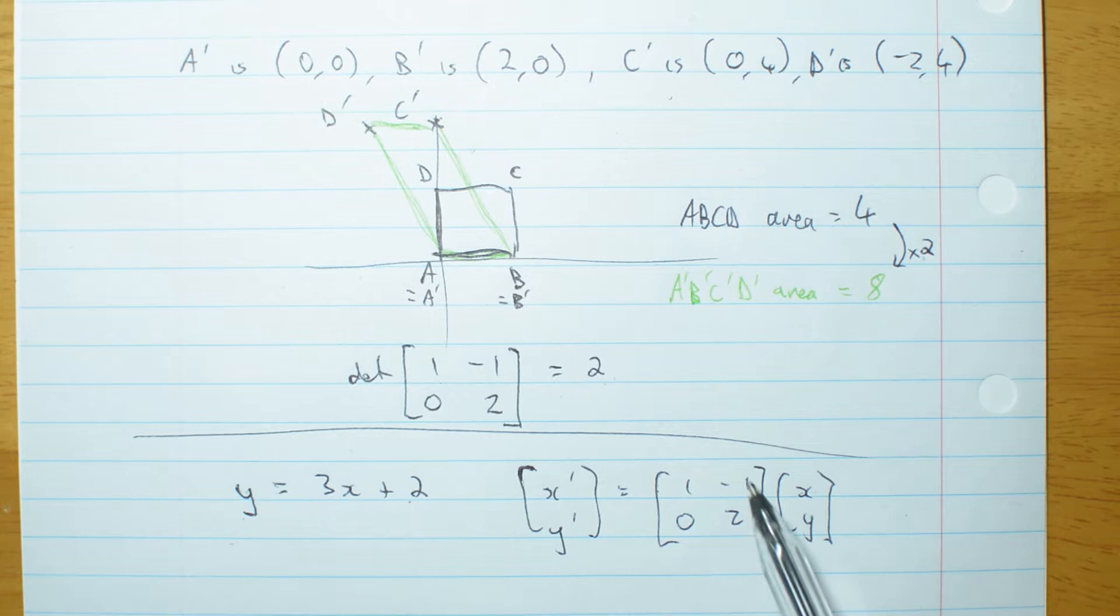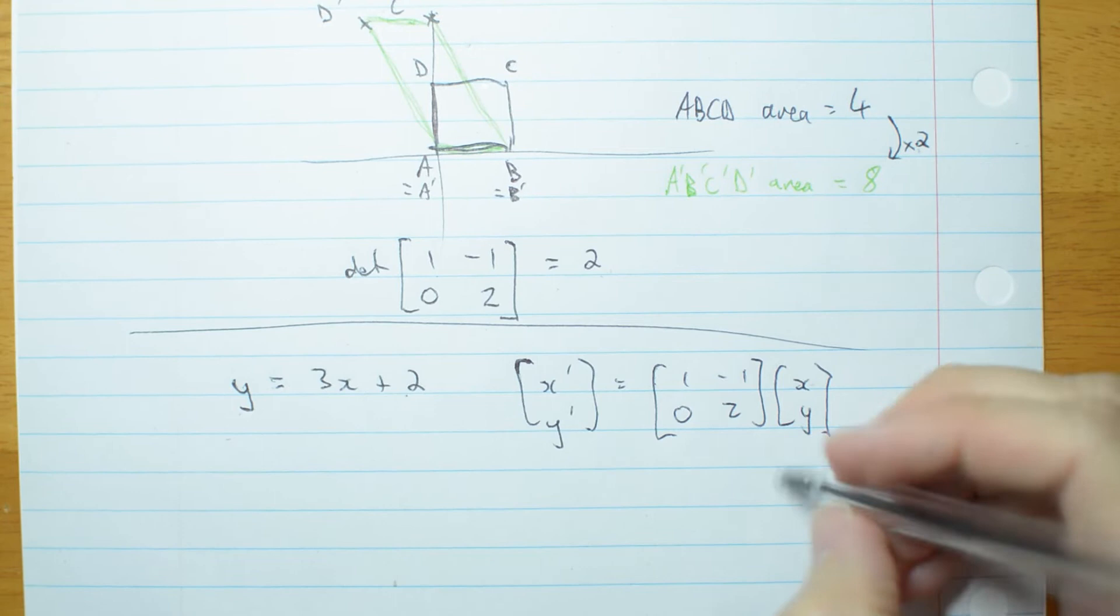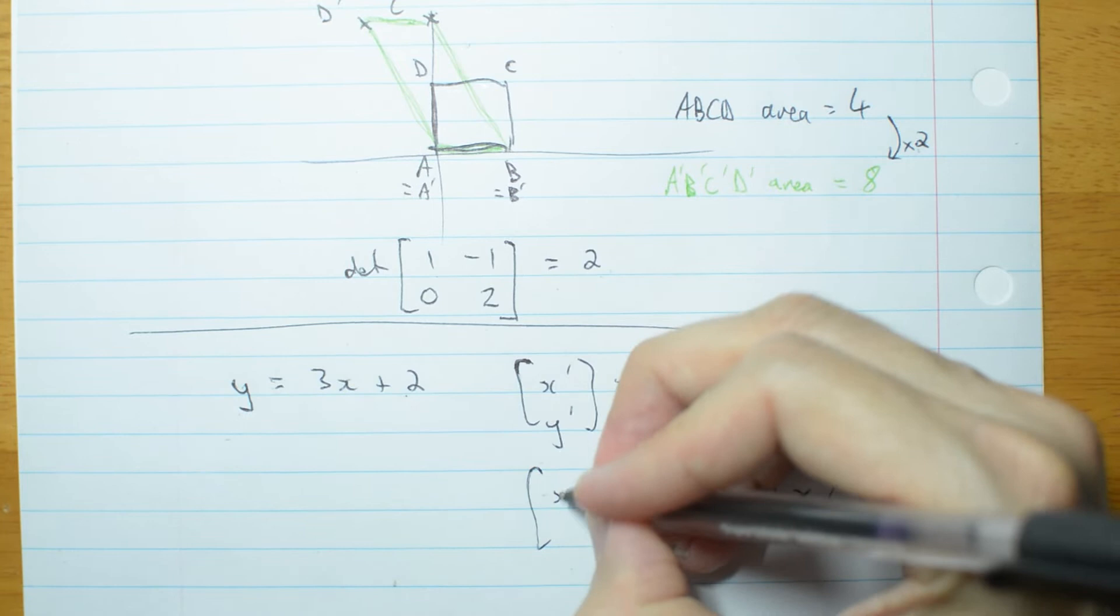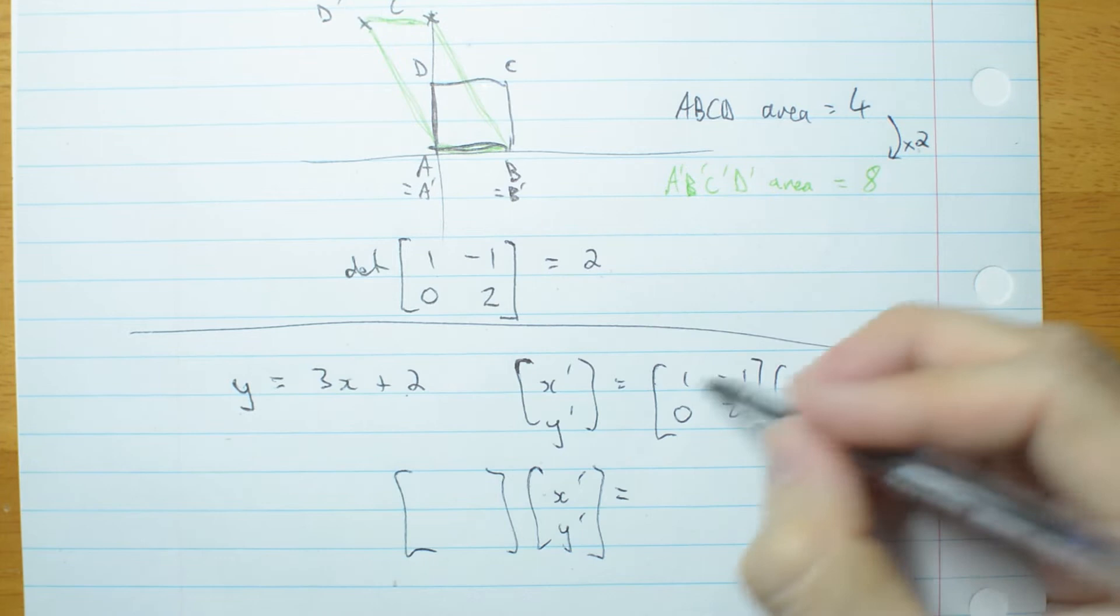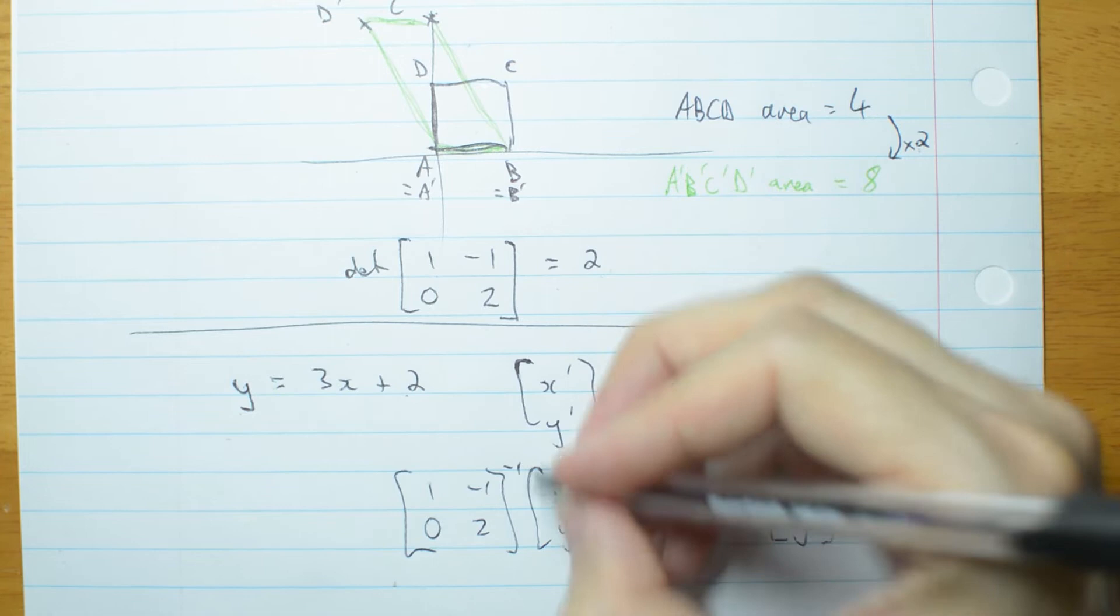I have to pre-multiply by the inverse of this matrix. x, y is going to be, what I had before, pre-multiply by the inverse of this matrix. 0, 2 to the power of negative 1. The inverse of this matrix.